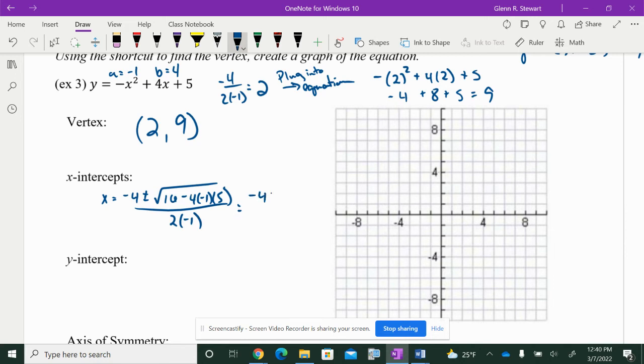So, negative 4 plus or minus the square root of 16 plus 20 is 36, all over negative 2. Negative 4 plus or minus 6 over negative 2, which then gives us negative 4 plus 6, which then gives us negative 10 over negative 2, which is 5, or 2 over negative 2, which is negative 1. So, either one of those will work.